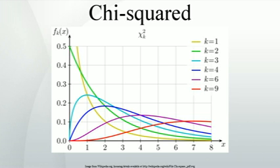Chi-squared distribution. In probability theory and statistics, the chi-squared distribution with k degrees of freedom is the distribution of a sum of the squares of k independent standard normal random variables. A special case of the gamma distribution, it is one of the most widely used probability distributions in inferential statistics, e.g., in hypothesis testing or in construction of confidence intervals.